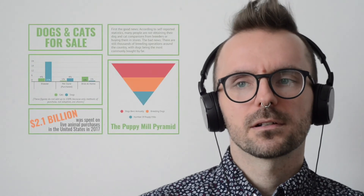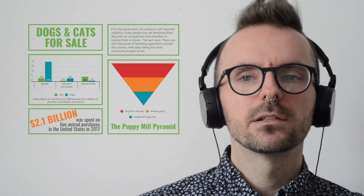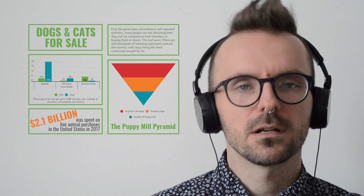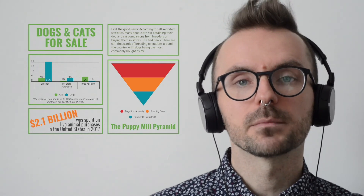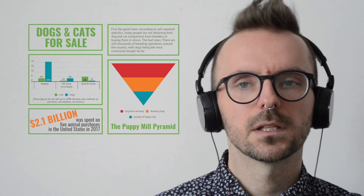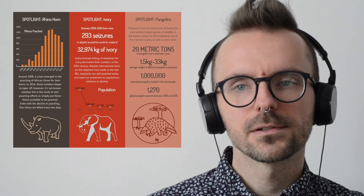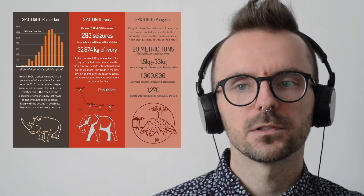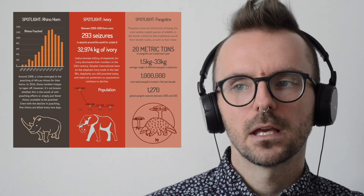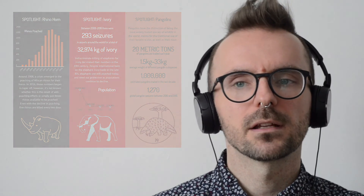Puppy mills are also a practice unknowingly supported by many people who choose to shop for a pet rather than adopt from a local shelter. There simply isn't the political will or infrastructure to gather this data at scale. What we do know is that the practice is widespread, and data viz can help define some of the contours of the problem — thanks to organizations like the Humane Society of the US, we have some sense of what the industry looks like. Similarly, with the illegal wildlife trade, what we know for sure is what we're able to catch — seizure numbers and dollar values — but not the true scale of underground trading.